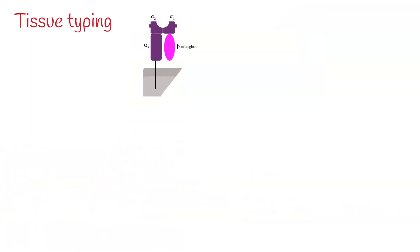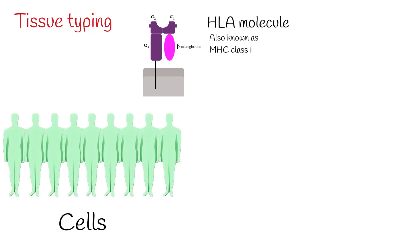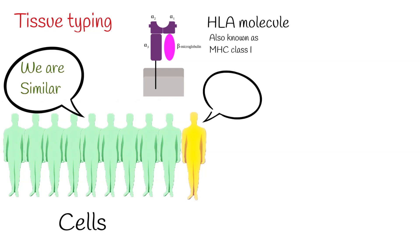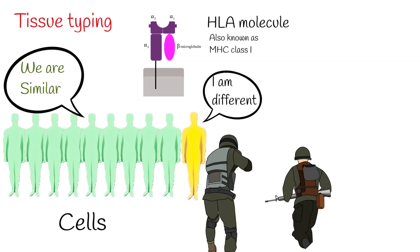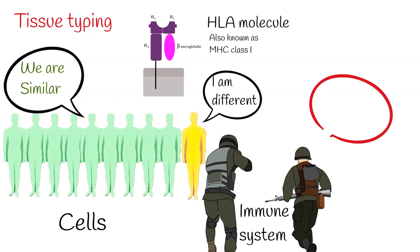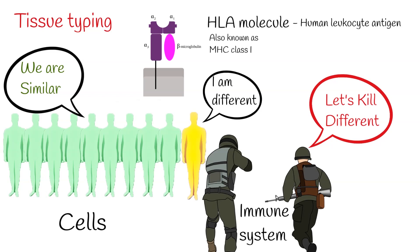Tissue typing is also required. Every cell displays HLA molecules. If the donor and recipient HLA are too distinct, the host's immune system considers it as non-self and attacks it, resulting in rejection of the tissue. HLA means human leukocyte antigen. These complexes should be as closely matched as possible to prevent graft rejection, which is why close relatives who are genetically similar are better donors.